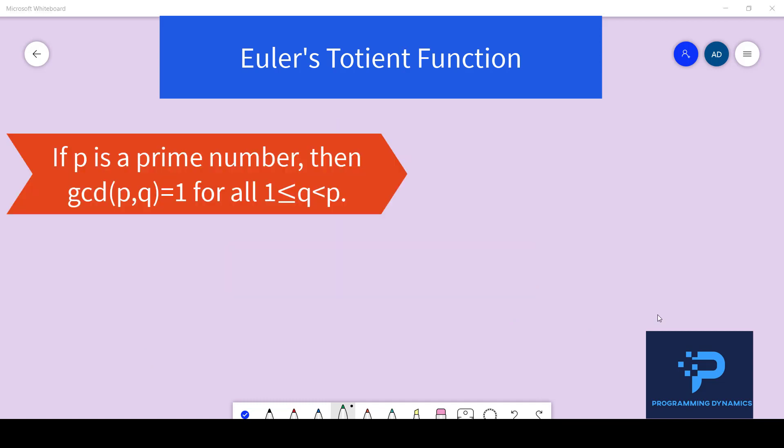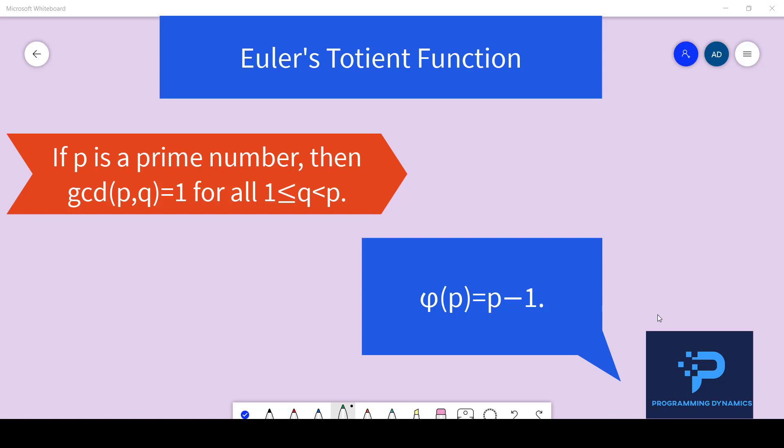So the first property is that if we are given a number p which is a prime number then GCD of p comma q equal to 1 for all q ranging from 1 to p. Therefore we get the Euler's totient function Phi of p equal to p minus 1. The proof of this statement is pretty straightforward. All the numbers from 1 to p minus 1 will be co-prime with p because p itself is a prime number and it only has two factors one and the number itself which is p. So it will only not be co-prime with itself and be co-prime with all other numbers. Therefore the GCD of all numbers from 1 to p minus 1 will be co-prime with p therefore the count is p minus 1 which is exactly what the Euler's totient function is about. So Phi of p equal to p minus 1. That's the first property.